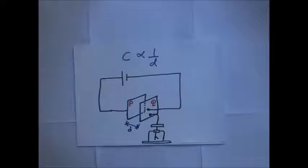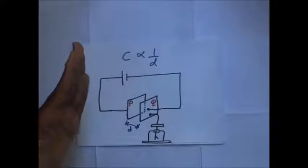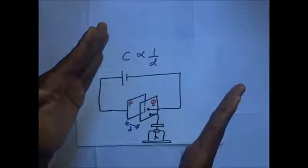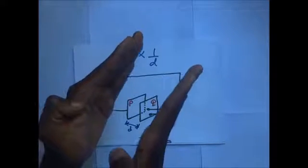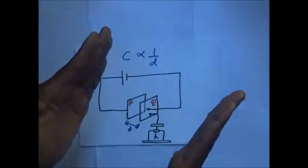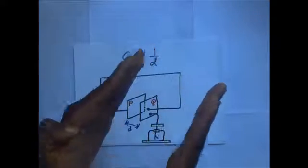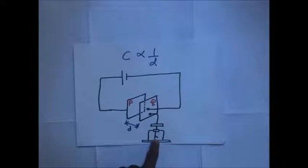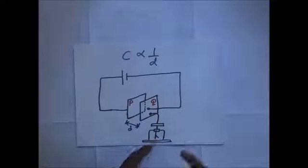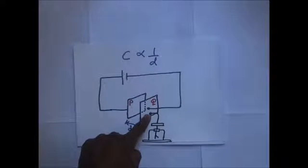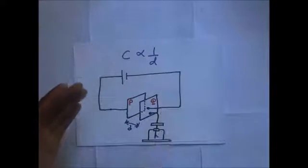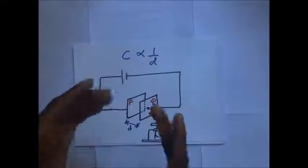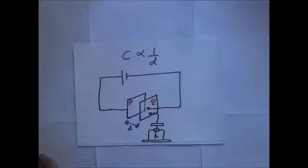With plate P and plate Q separated by distance D, when we bring the plates together we are reducing the value of D. As the plates are brought together, more charge accumulates on the plate. This means that when the value of D is decreasing — when you bring the plates together — the capacitance of the capacitor is increasing.